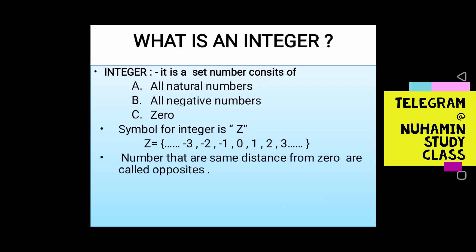Numbers at some distance from zero are called opposites. For example, negative three is the opposite of positive three. The positive and negative of the same number are opposites.